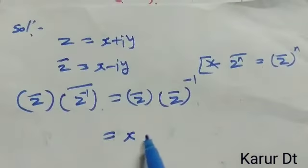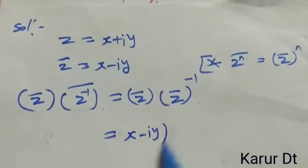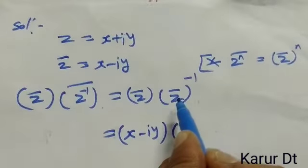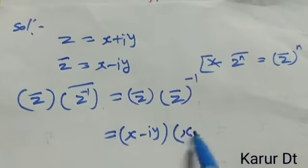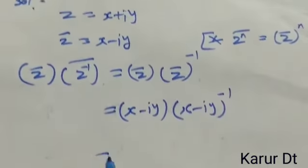Z bar is X minus i y. Into Z bar inverse. Z bar is X minus i y whole power inverse.